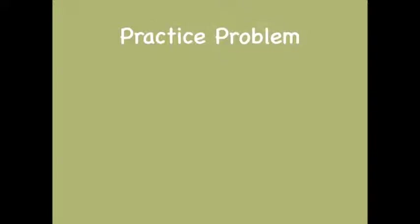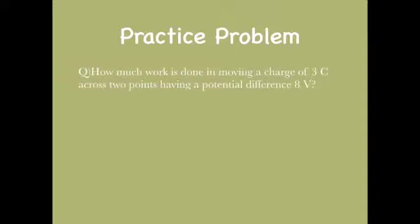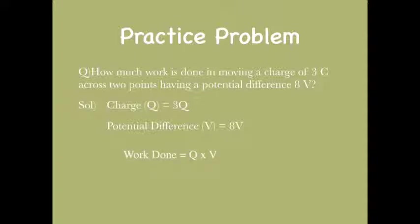Let's solve two problems on electric potential. Problem 1: A charge of 3 coulombs and a potential difference of 8 volts is given. Find the work done. From the given data, Q equals 3 coulombs and V equals 8 volts. Using the formula W equals Q multiplied by V, and substituting the values, W equals 24 joules.